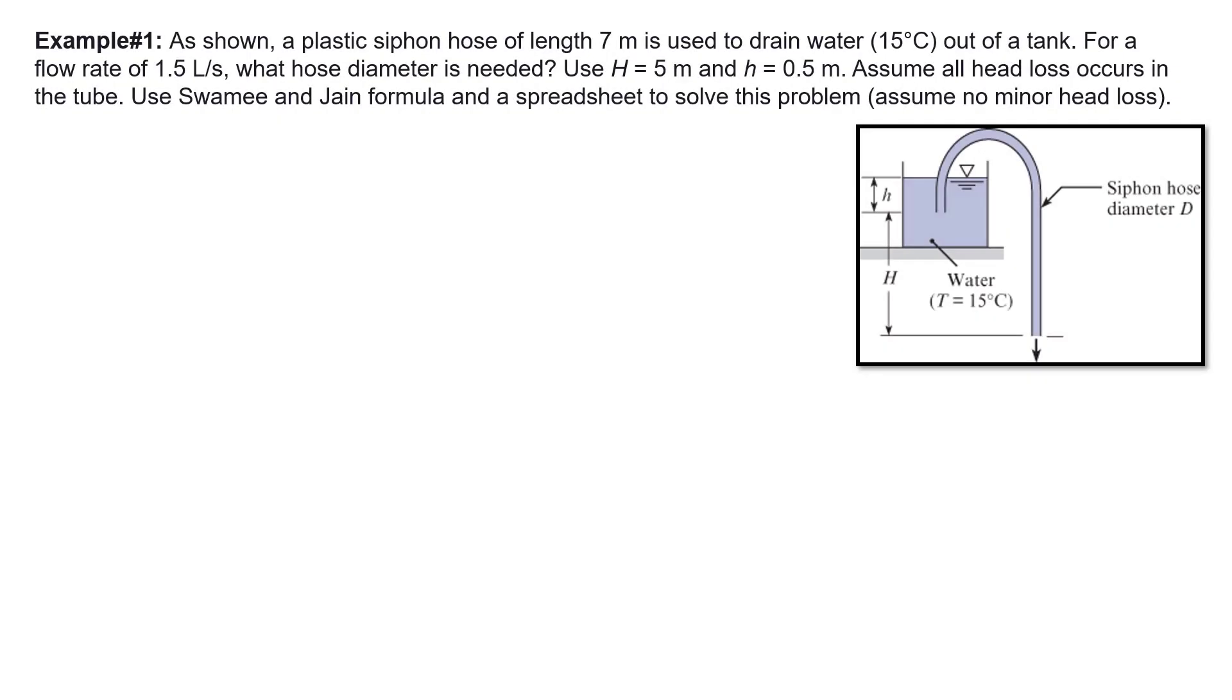In this example, a plastic siphon hose of length 7 meters is used to drain 15 degrees Celsius water out of a tank. Based on this temperature, you can go to the back of your book and find out the value of kinematic viscosity, which would be 1.14 times 10 to the power negative 6 meters squared divided by second.